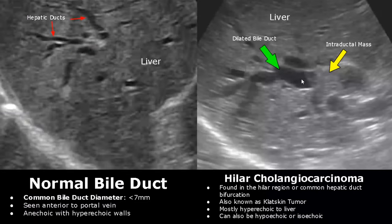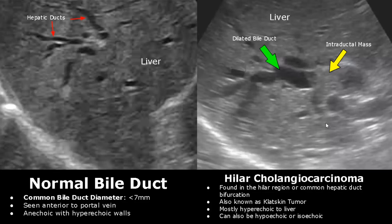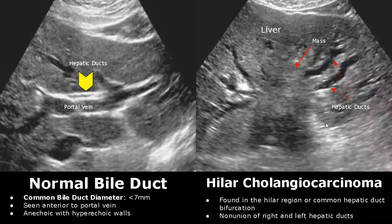Hilar cholangiocarcinoma is also called the Klatskin tumor. It is found in the hilar region of the liver as well as around the common hepatic duct bifurcation. The mass is mostly hyperechoic but can sometimes be hypoechoic or isoechoic. In this image we can see both the right and left hepatic ducts, but they are not continuing to form the common hepatic duct because the mass has occupied this region — this is called non-union of the right and left hepatic ducts, and this feature is helpful in diagnosing hilar cholangiocarcinoma.